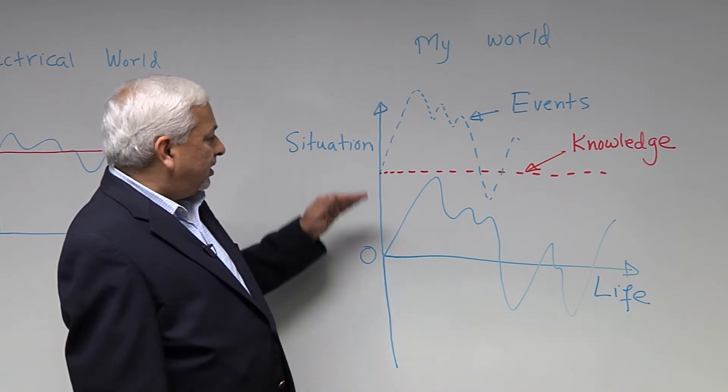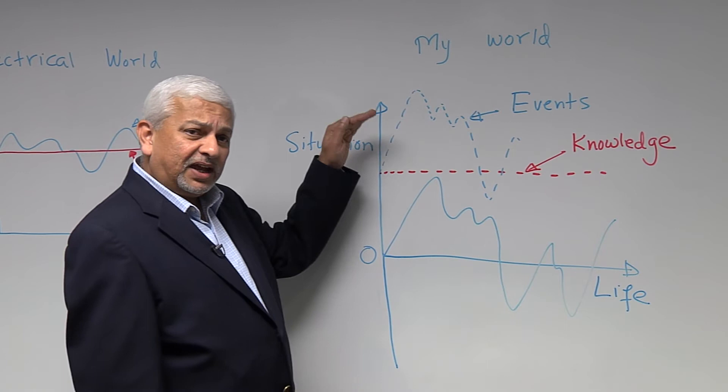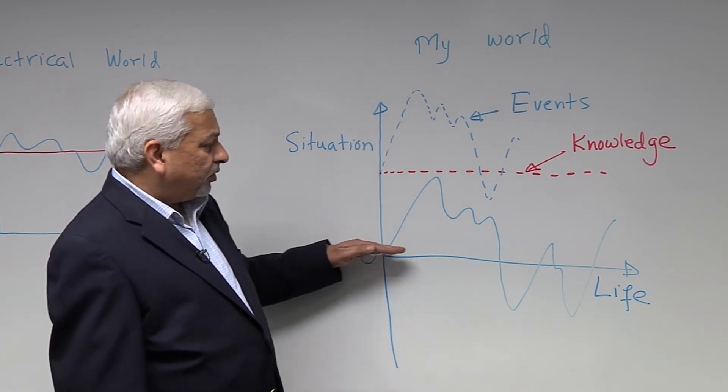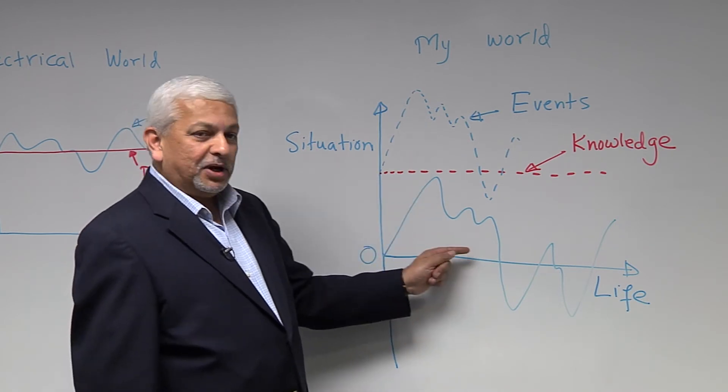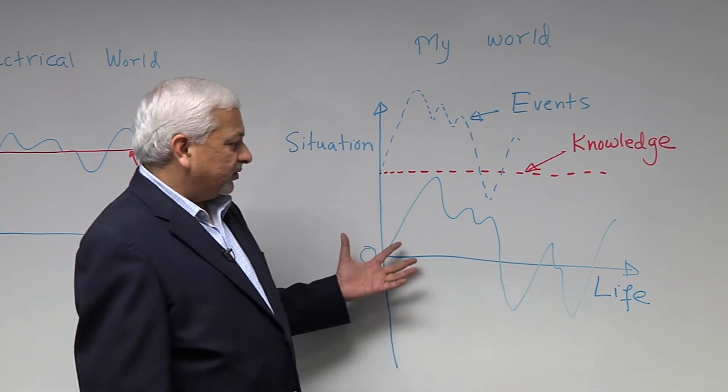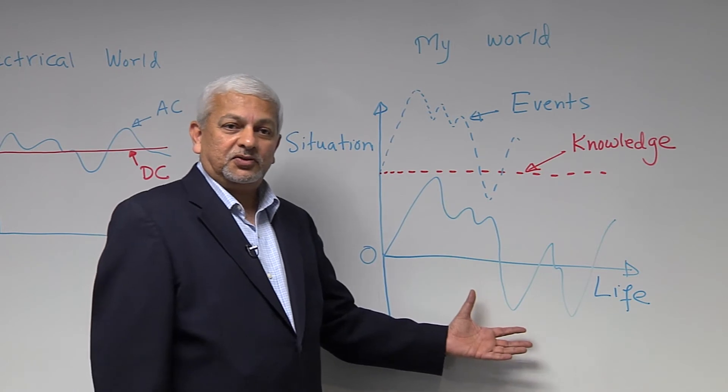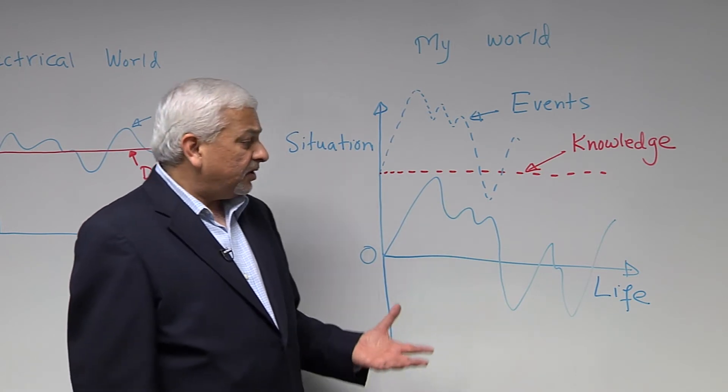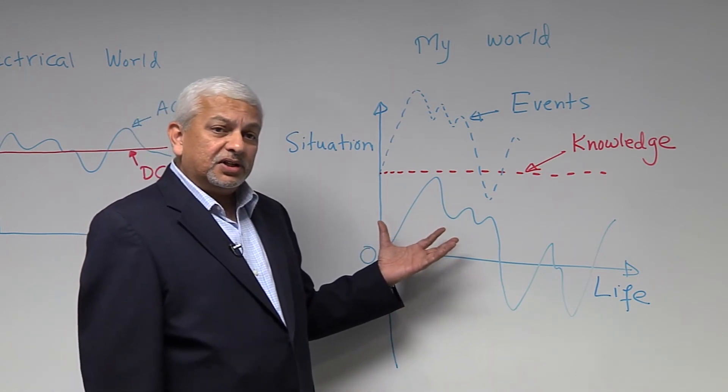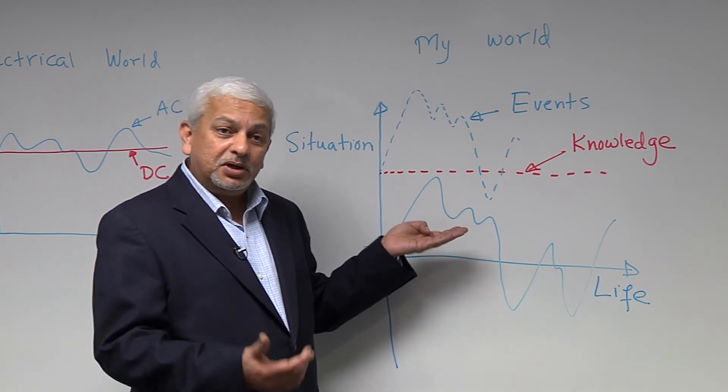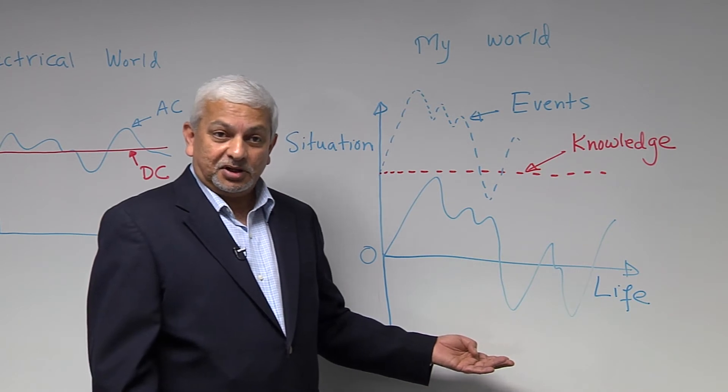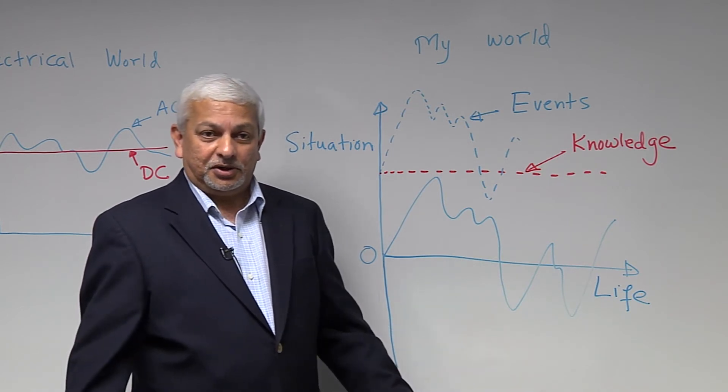But the question is, if you look at this axis here, what I'm calling the zero axis - suppose this is how my life is. Part of the time, things are going positive. Part of the time, things are going negative. The question is, how do I deal with this? Because if it goes positive, I may get excited, I may be happy. If it goes negative, I may still get excited, but in a negative way and I may be miserable.